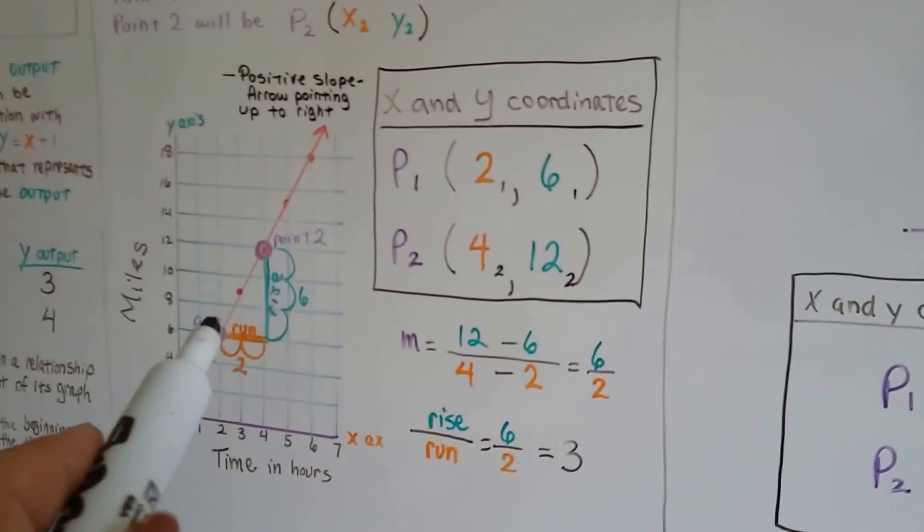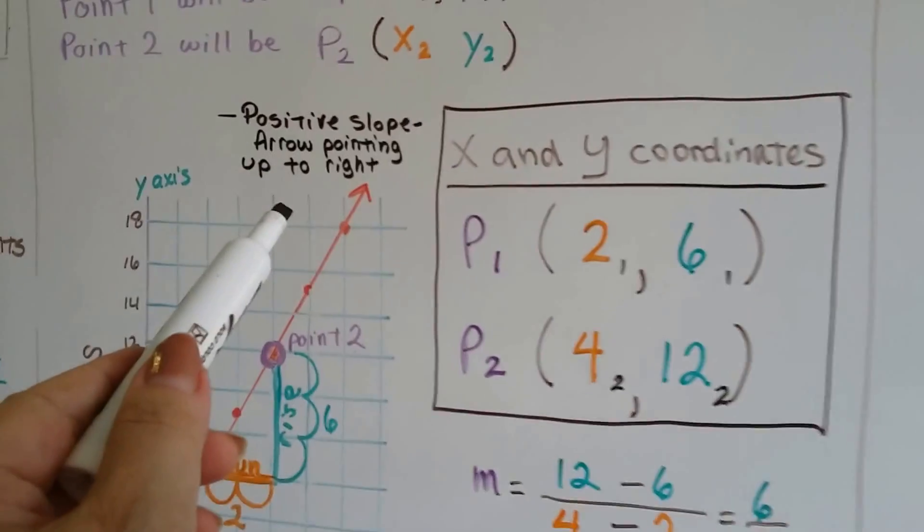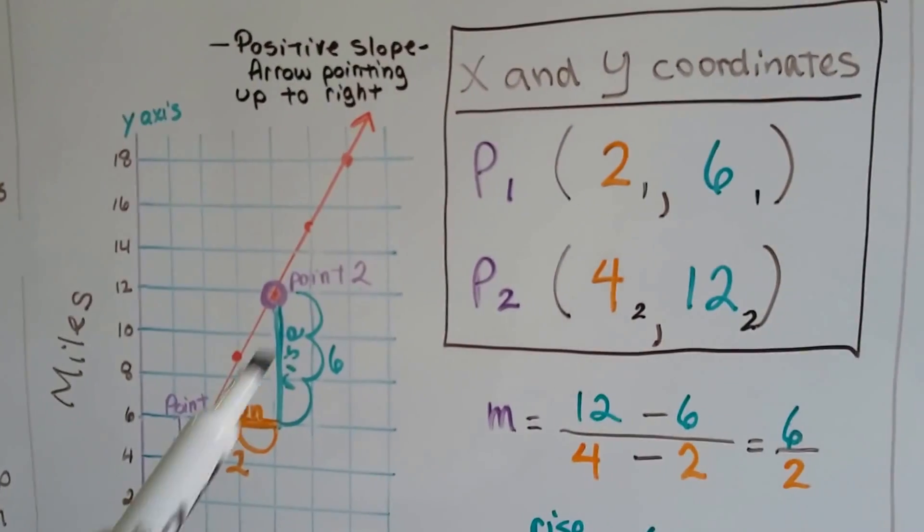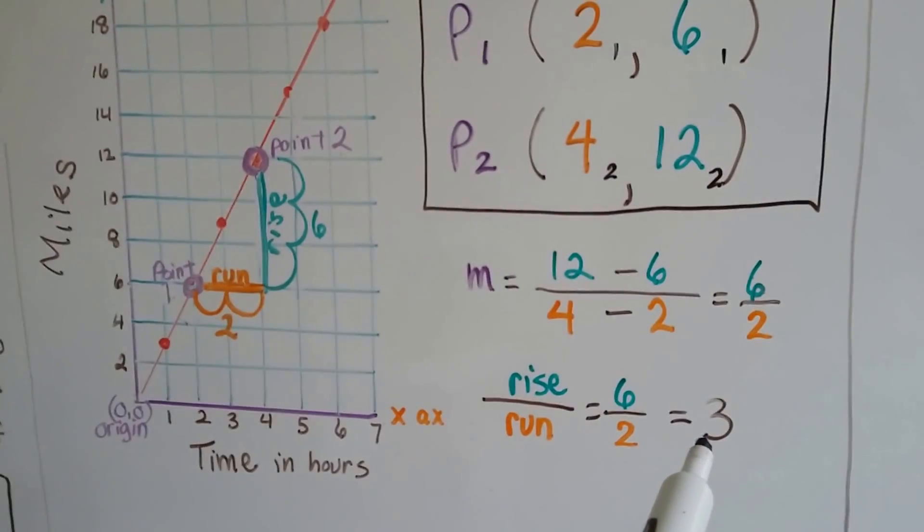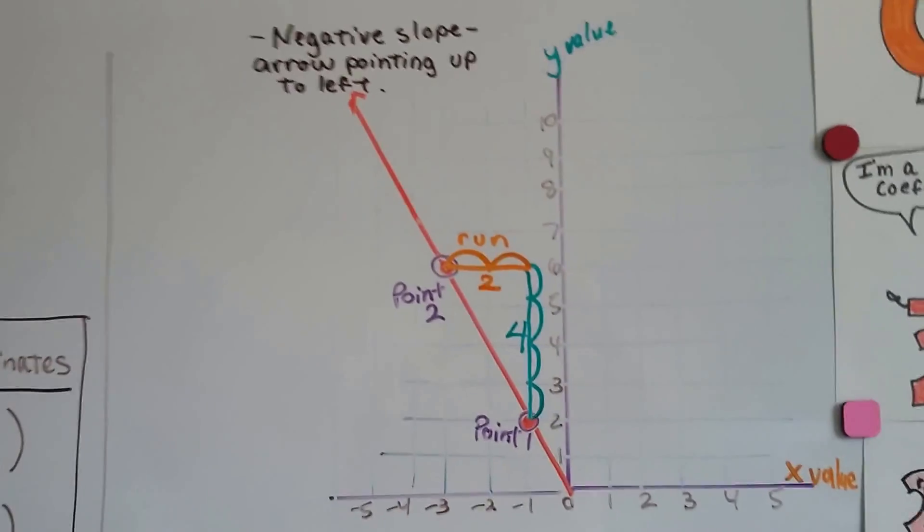Now just by looking at this line, I can see that because it's going up to the right, we're going to have a positive slope. The arrow's pointing up to the right. It's starting down here and going up to the right. And we get a positive slope. We get a positive 3.